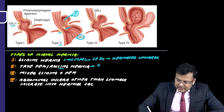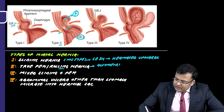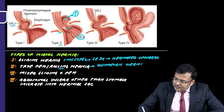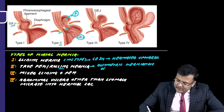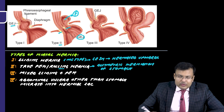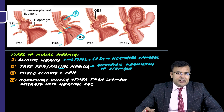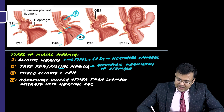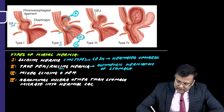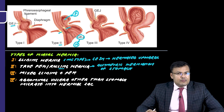In Type 2, there is asymmetric herniation of part of the stomach — that is, the fundus — next to the esophagus. 'Para' means by the side, so next to the esophagus. The most commonly herniated part is the fundus. If you see the GE junction here, its position is normal.